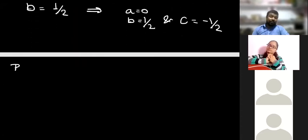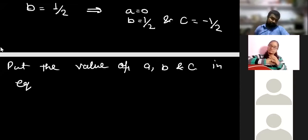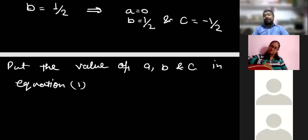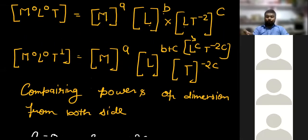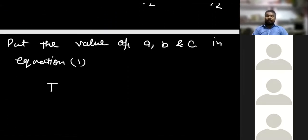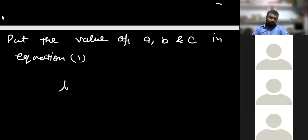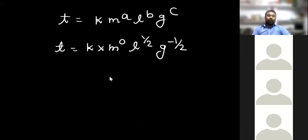So finally A = 0, B = 1/2, and C = −1/2. Next step: put the values of A, B, and C into equation 1. Equation 1 is T = K · M^A · L^B · G^C. Substituting: T = K · M⁰ · L^(1/2) · G^(−1/2), which simplifies to T = K · √(L/G). This is the formula for the time period of a simple pendulum.